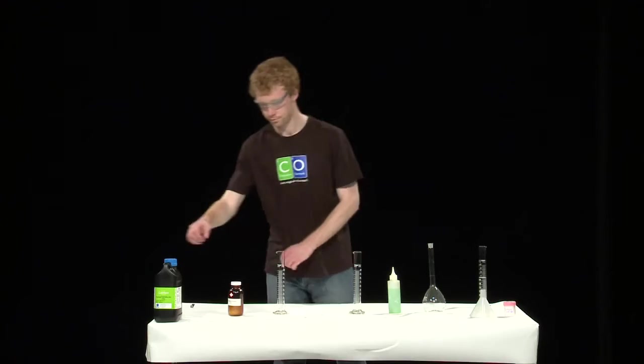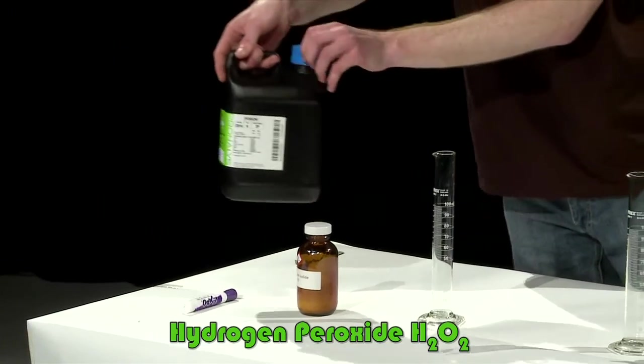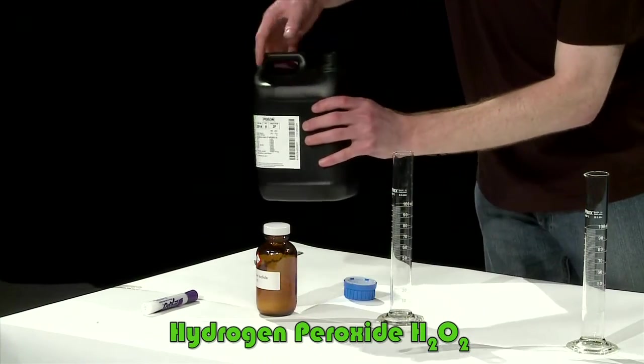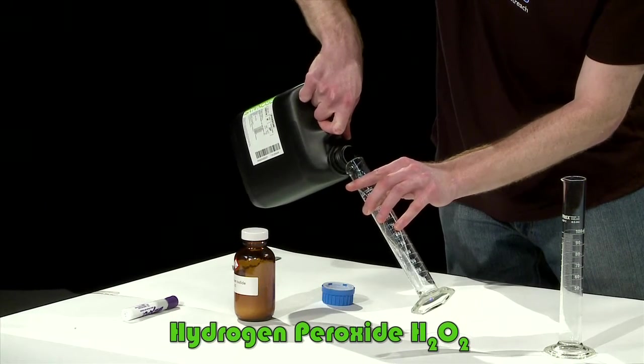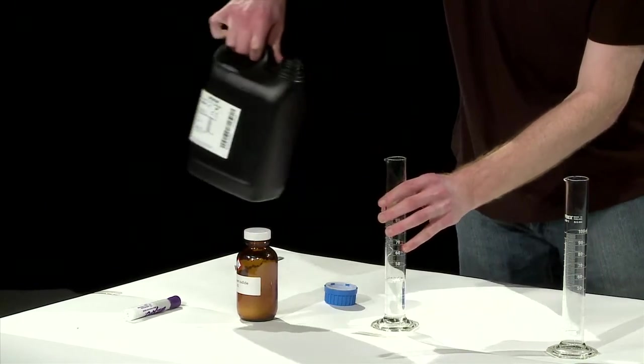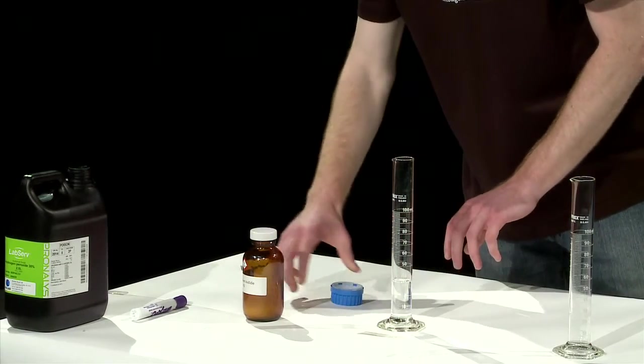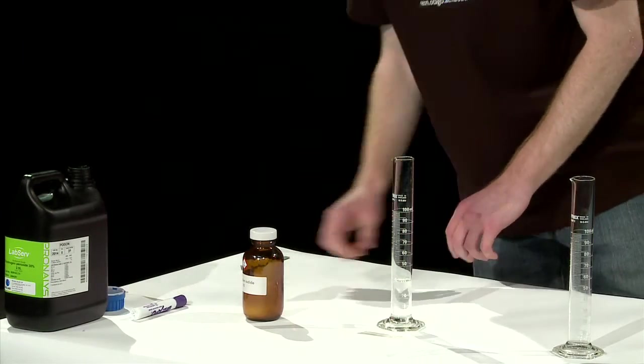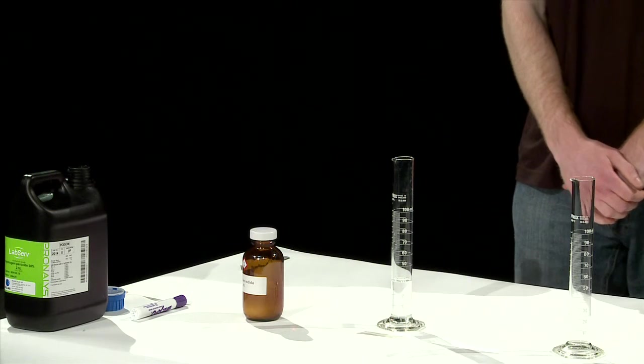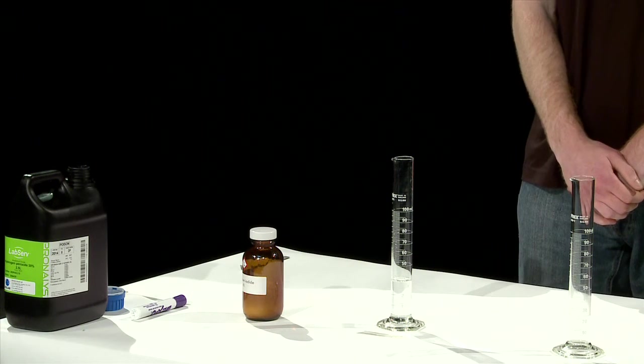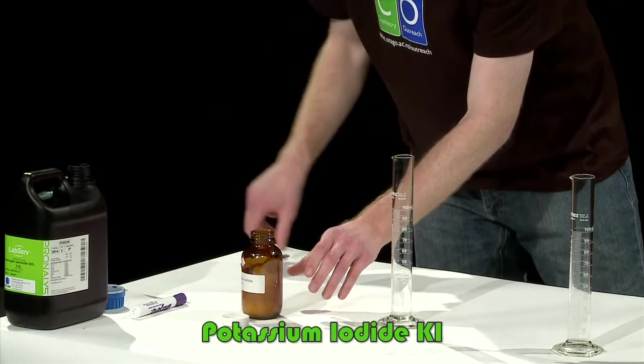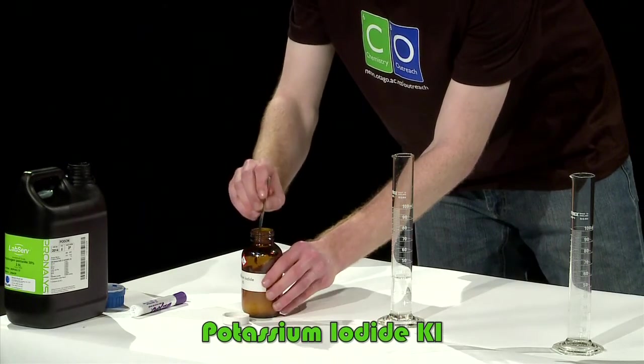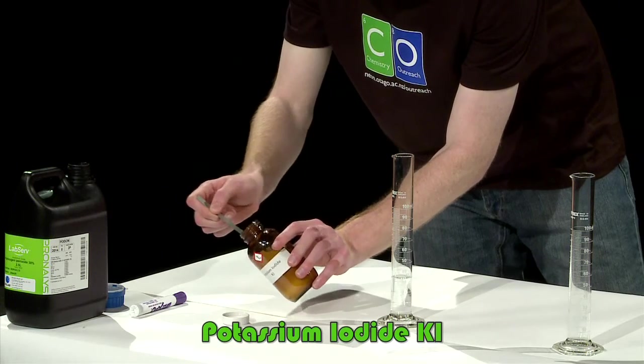We start with some hydrogen peroxide. Now as you'll see in a minute, hydrogen peroxide is a clear colorless liquid. It's important to use concentrated hydrogen peroxide for this experiment. We're using 30% concentrated. Now the second chemical we're going to use for this reaction is potassium iodide. Potassium iodide is a nice white solid.